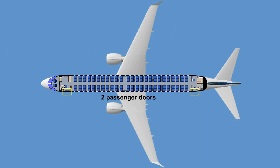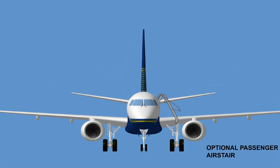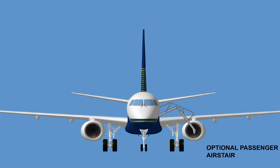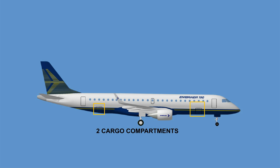Two passenger doors on the left and two service doors on the right-hand side of the aircraft provide passenger and service access. An optional passenger air stair on the forward passenger door allows independent boarding. There are two cargo compartments below the passenger cabin, one in front and one behind the wing fairing.